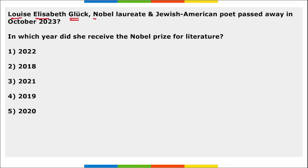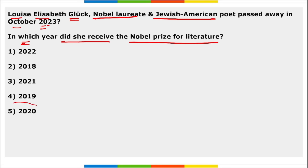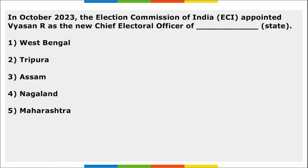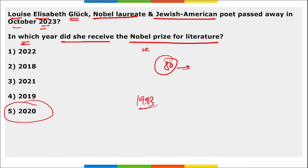Next, Louise Elizabeth Glück, a Nobel Laureate and Jewish-American poet, passed away in October 2023. In which year did she receive the Nobel Prize for Literature? She passed away recently in 2023 at the age of 80 in Cambridge, USA. She received the Nobel Prize in Literature in 2020. Also remember, in 1993 she was awarded the Pulitzer Prize.